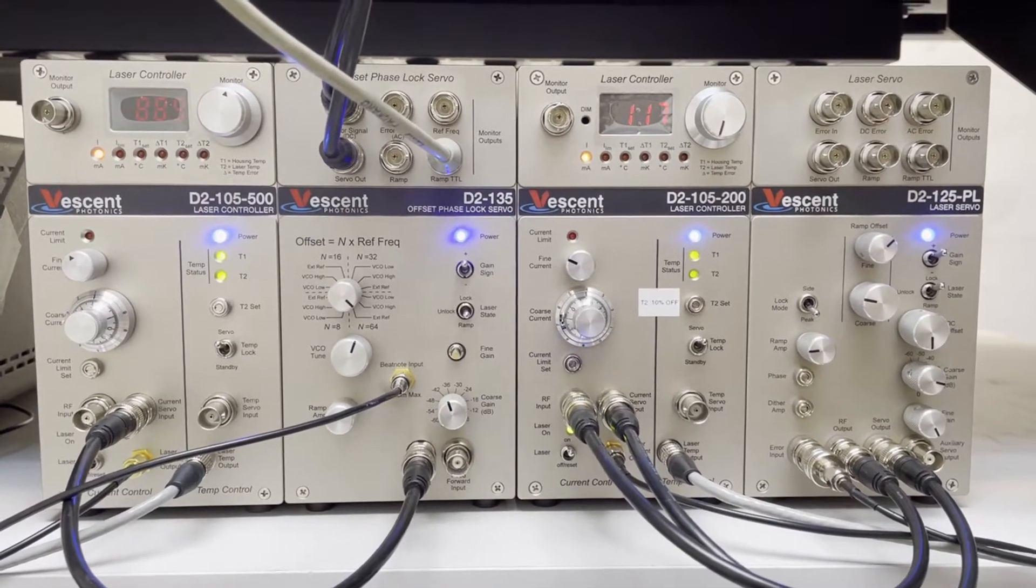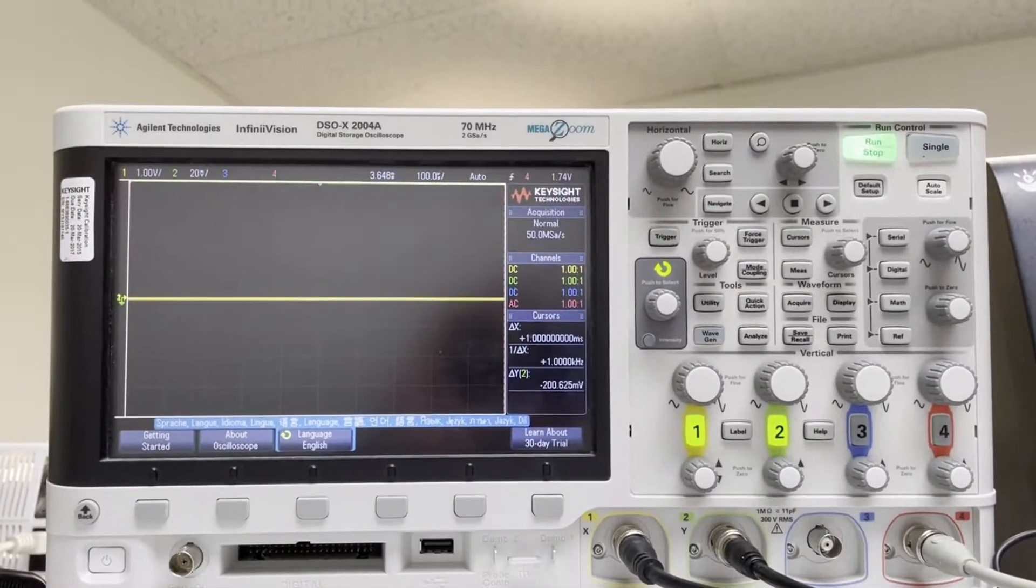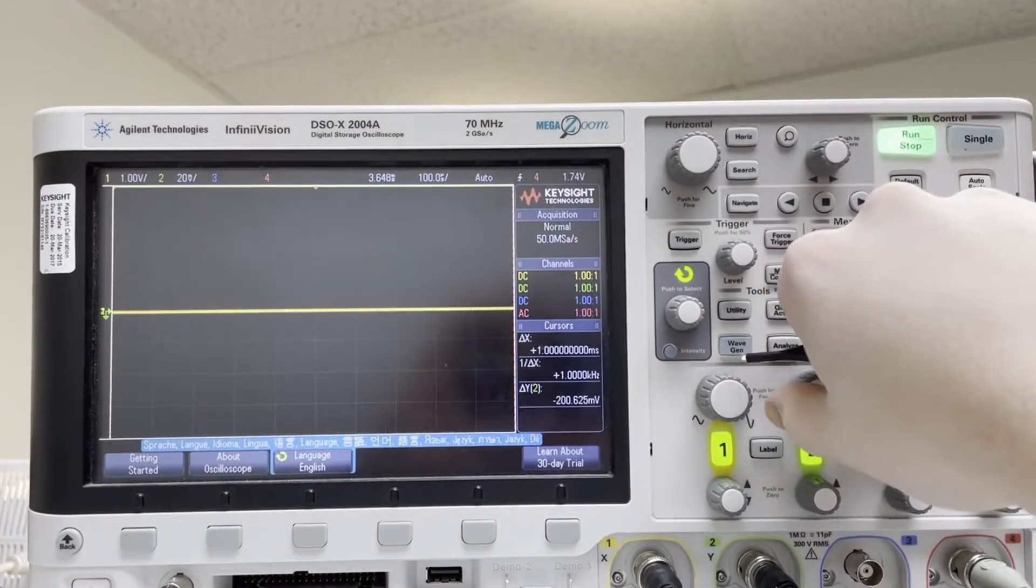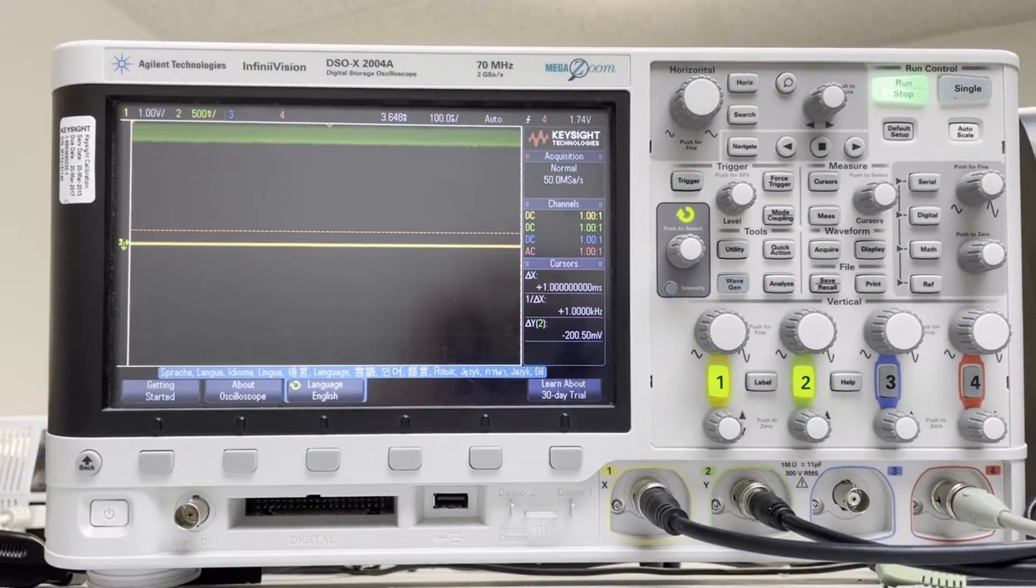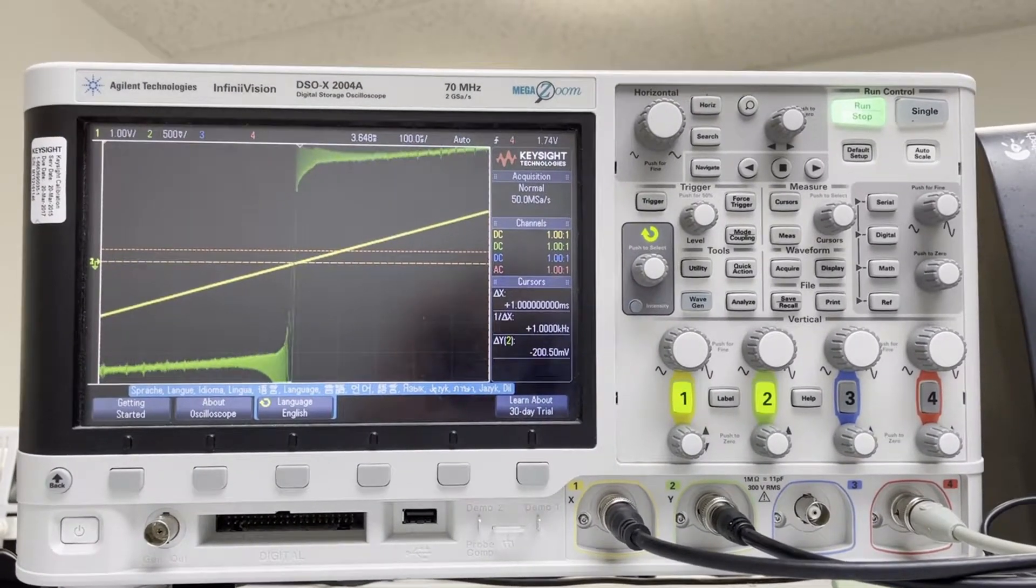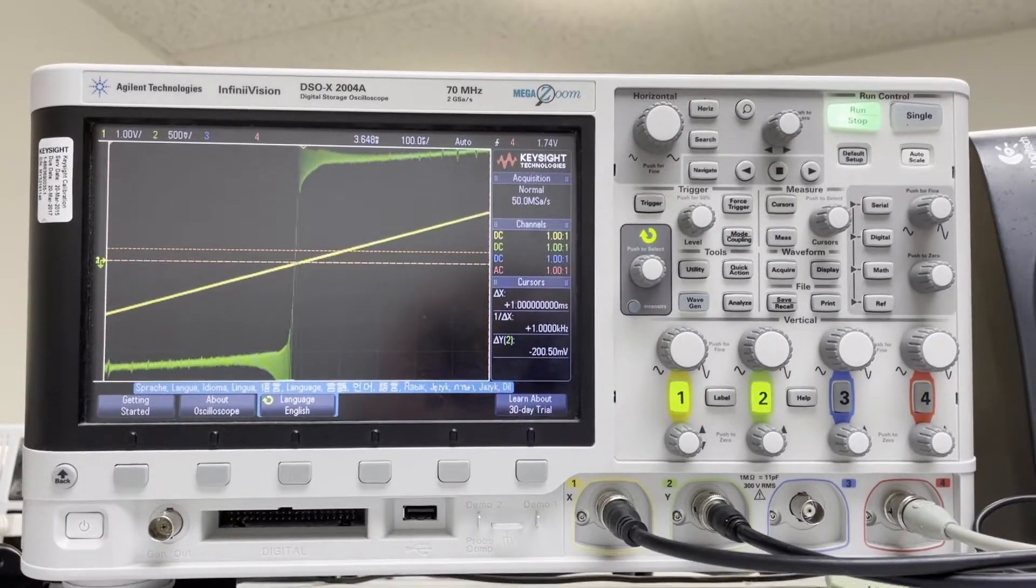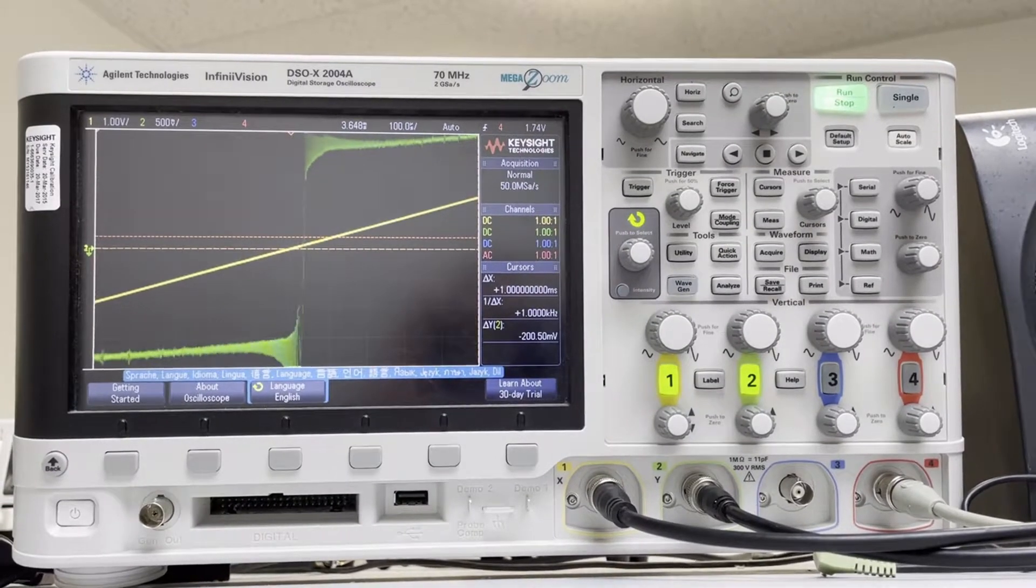Great, so now that we have this set up, we can come back to our oscilloscope. We'll need to zoom out a little bit to see anything, and we should be able to switch the D2-135 into ramp mode and get a nice looking half of a house signal here.